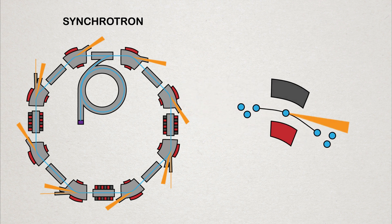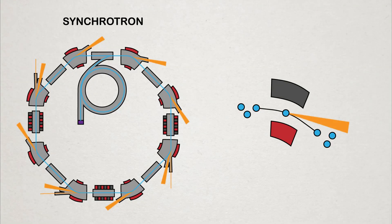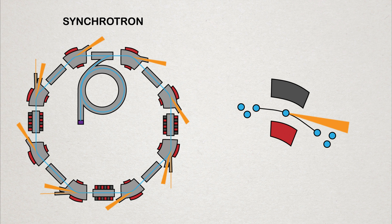Bending magnets do as their name suggests. They bend the electron beam around the corners of the synchrotron. As the electrons have a charge, when they change direction around the synchrotron, they emit light.